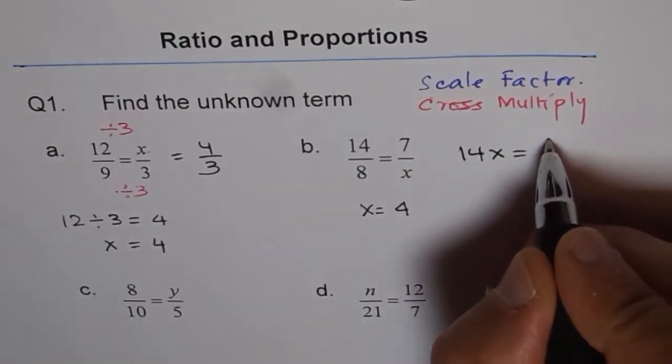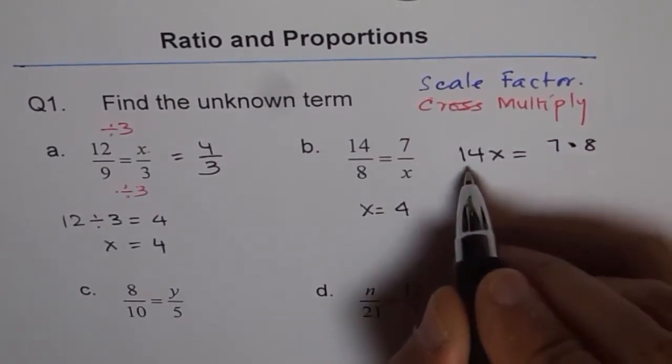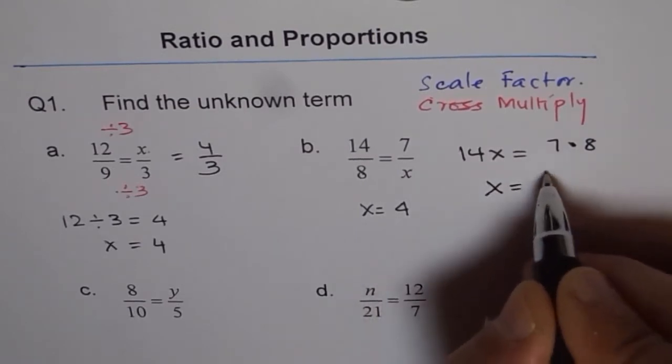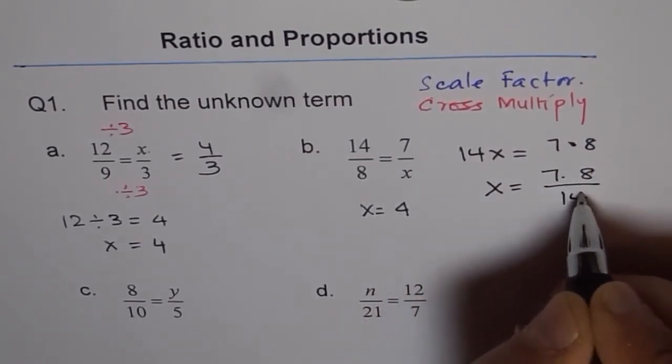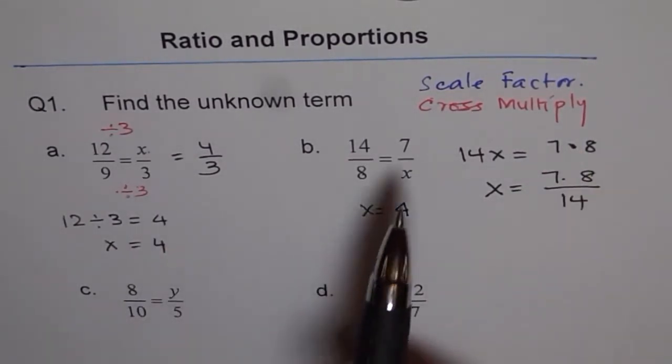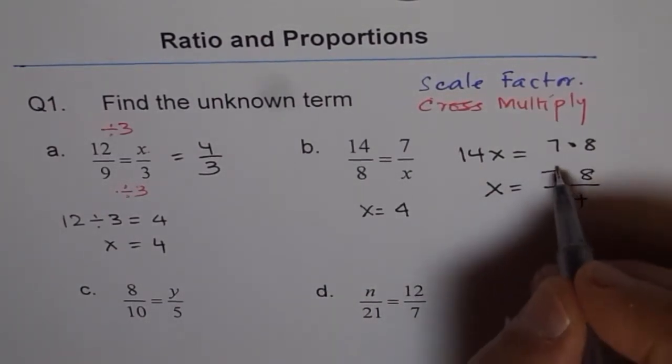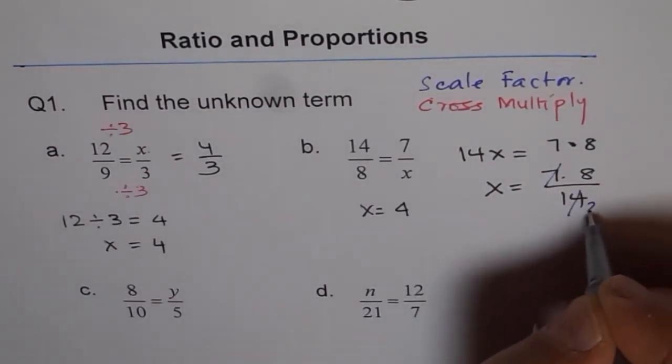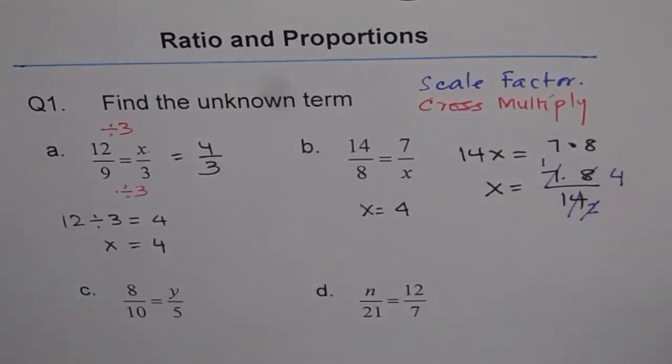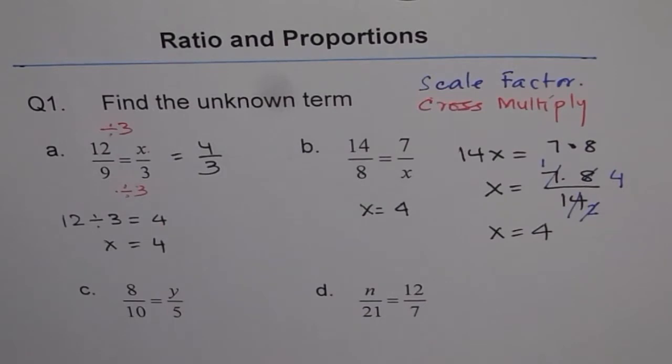Then we divide both sides by 14, so x = (7 × 8)/14. This method is very helpful if you can't find the scale factor easily. This can be simplified: 7 goes into 14 two times, and 8 divided by 2 is 4, so x = 4. That's the answer using cross multiply.